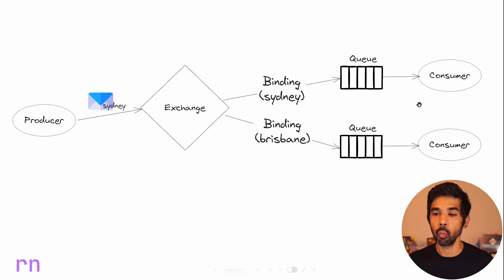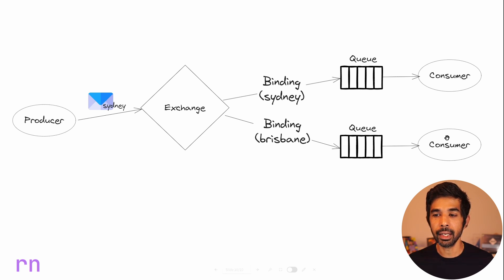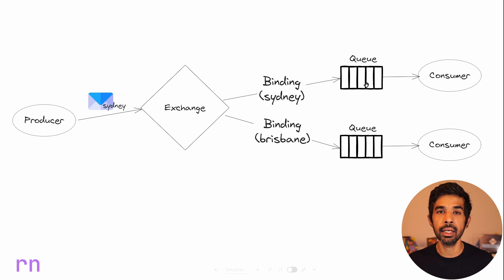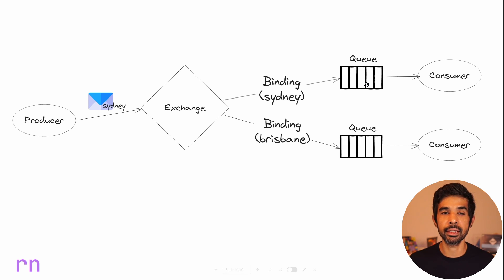You can have one instance of this consumer pulling messages from this queue or you can have multiple consumers. In that case, only one of these consumers will pick up the message, as we have seen in the introduction video linked here and in the descriptions below.